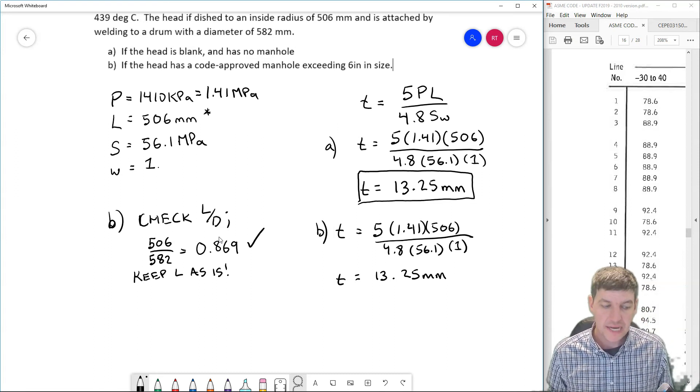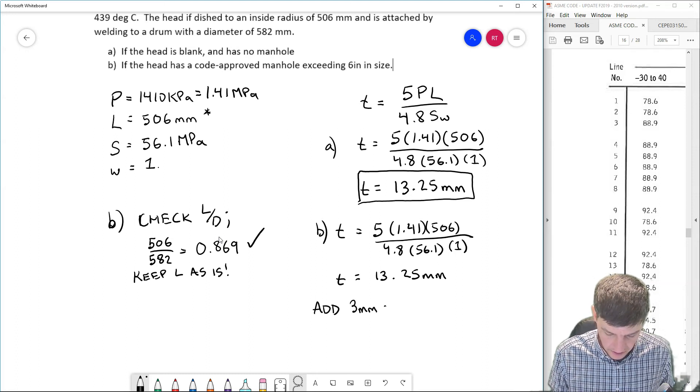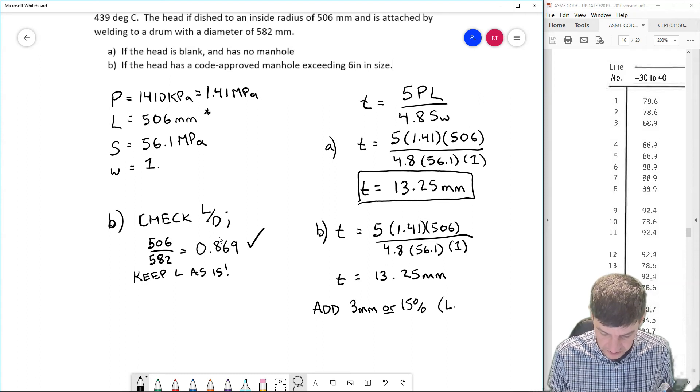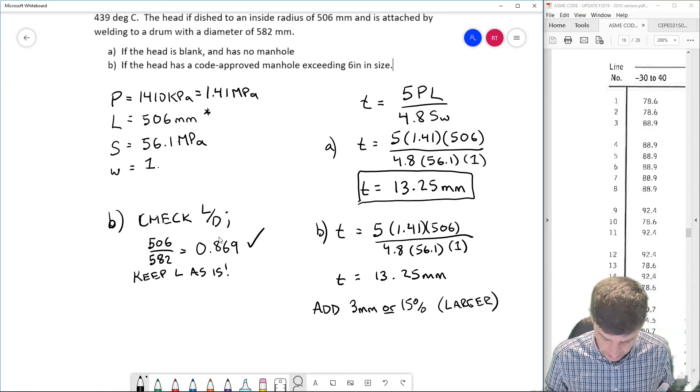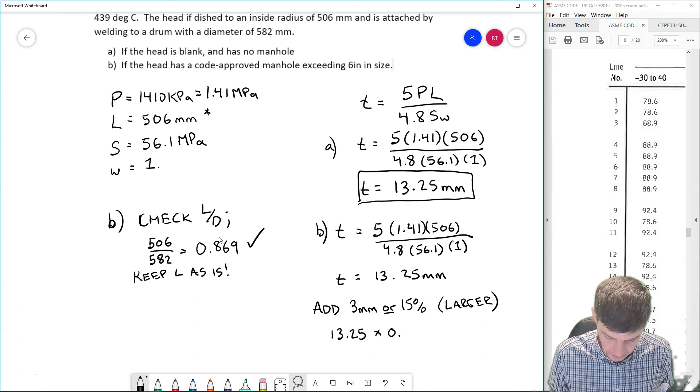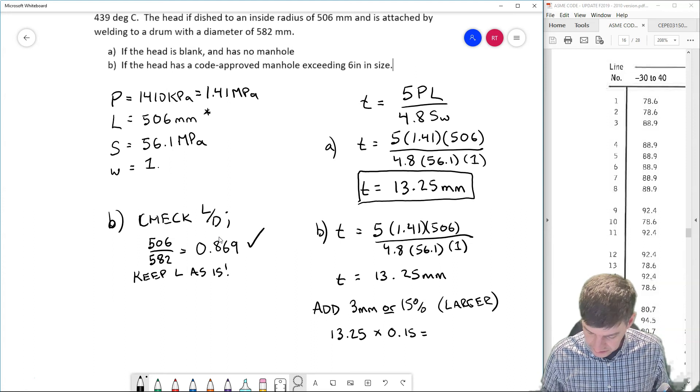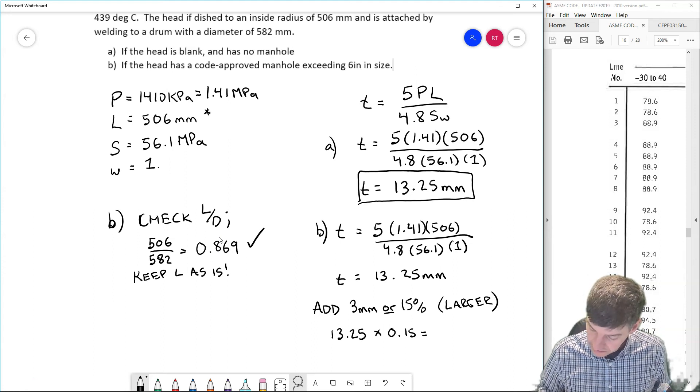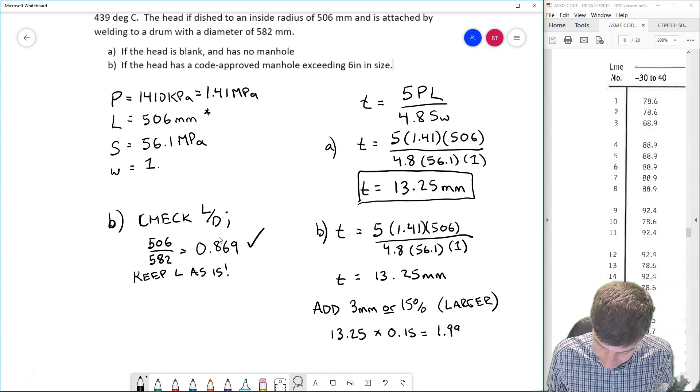Okay, but because I have a manhole, the code says I need to add thickness. And in the case of a manhole, now I have to add either three millimeters or 15 percent, whichever is larger. Okay, so in order to find that, I'm going to take 13.25 and multiply it by 0.15 and let's see if it's larger than three or less than three. So 13.25 times 0.15, and that gives me like 1.99 millimeters.